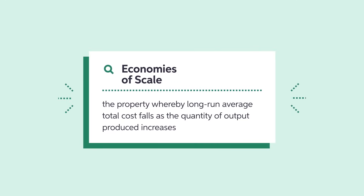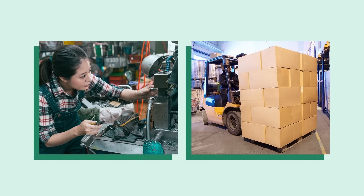For some production processes, the average cost of producing a single unit of a product decreases with total quantity produced. This can be due to different factors — workers learn on the job, and the prices of inputs can be negotiated when you buy large quantities.